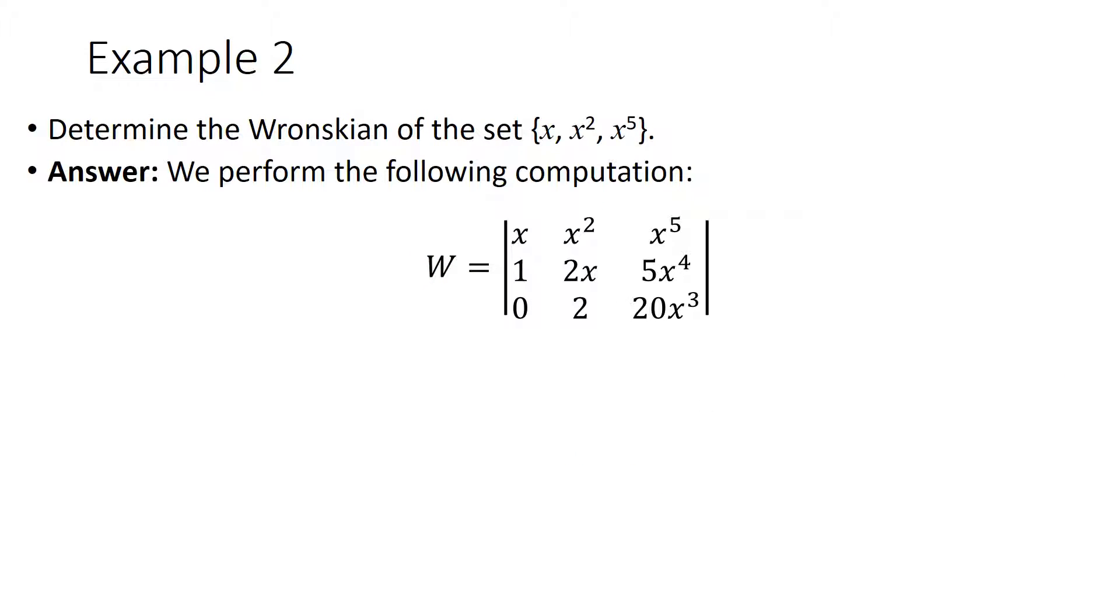For our second example we shall determine the Wronskian of the set x, x squared, and x to the fifth. We perform the following computation and here we have set up our matrix with the functions as the first row of the matrix, the first derivative functions as the second row, and again the second derivative functions on the third row. We'll go through and compute the determinant and we get 12x to the fifth for the Wronskian.